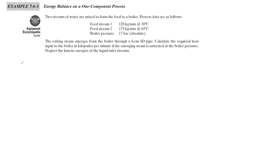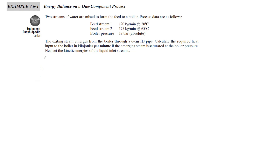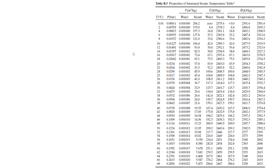Let's see what the flowchart is. You can see the feed stream conditions. Feed stream 1: 120 kg per minute at 30 degrees Celsius. Feed stream 2: 175 kg per minute at 50 degrees Celsius. I can see the data.